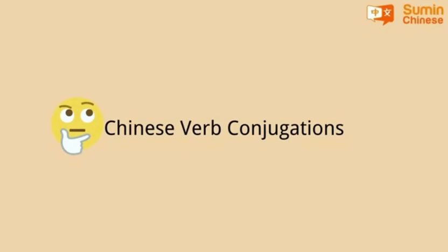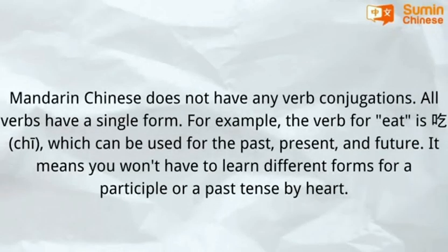Chinese verb conjugations: Mandarin Chinese does not have any verb conjugations. All verbs have a single form. For example, the verb for 'eat' is 吃, which can be used for the past, present, and future. It means you wouldn't have to learn different forms for past or future tense by heart.